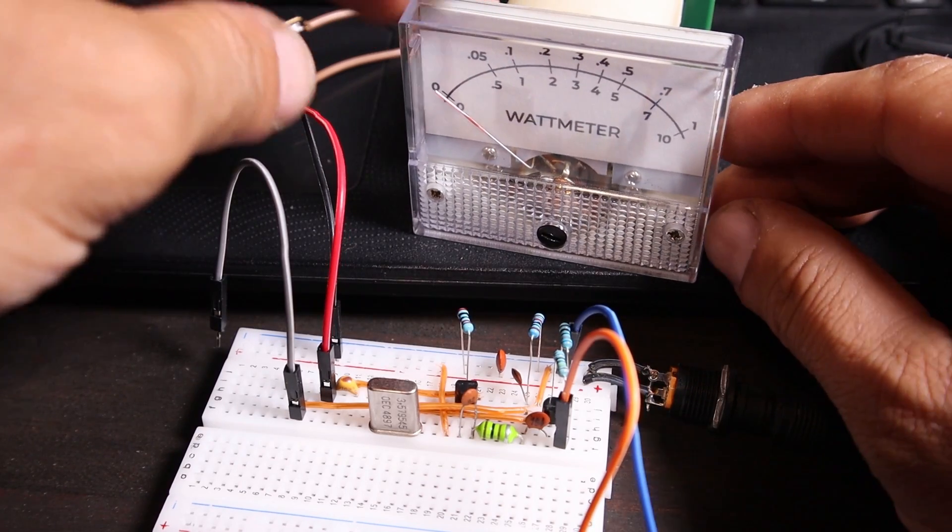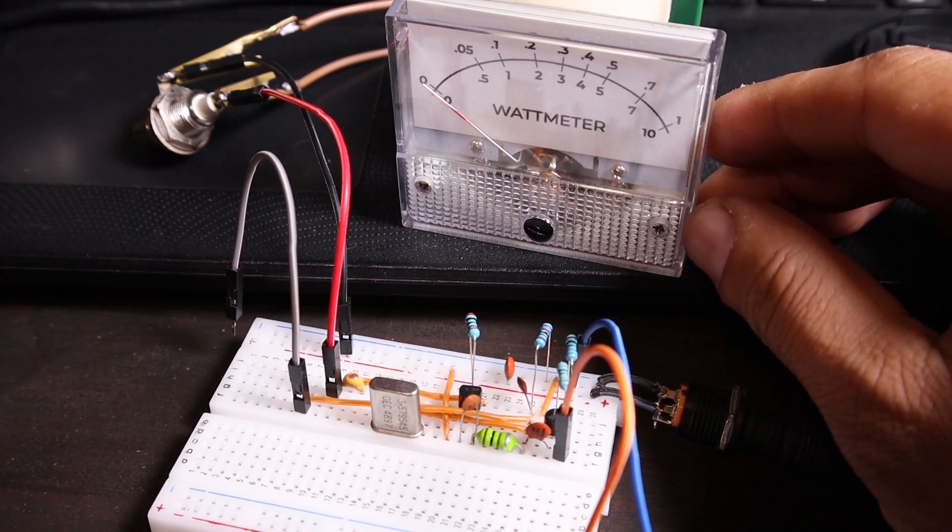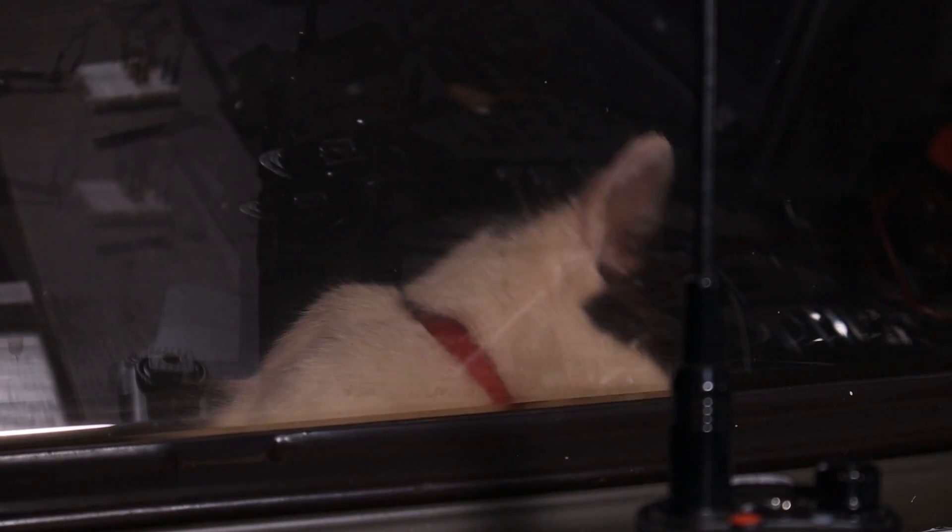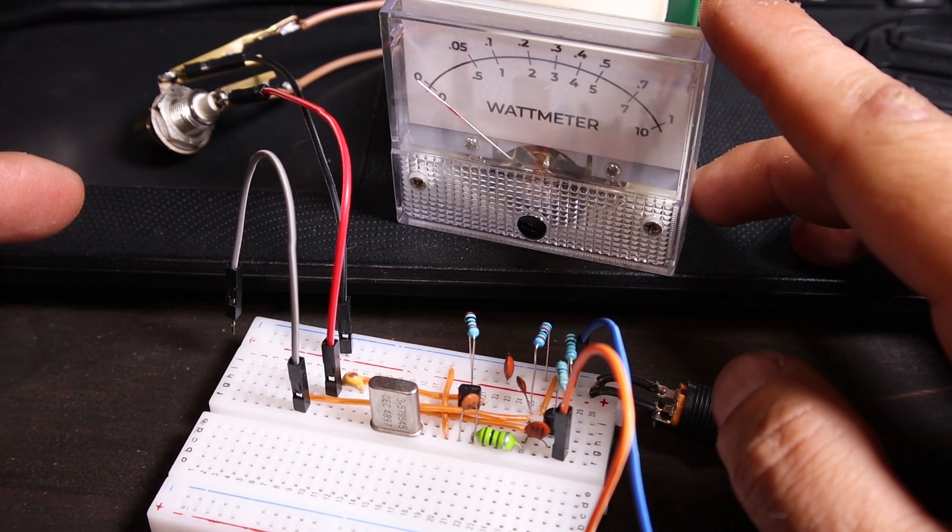It's very annoying that I have very limited space here on the table to move and film and my cats are scratching the door outside, they want to get inside. Anyway, I connected the RF watt meter.